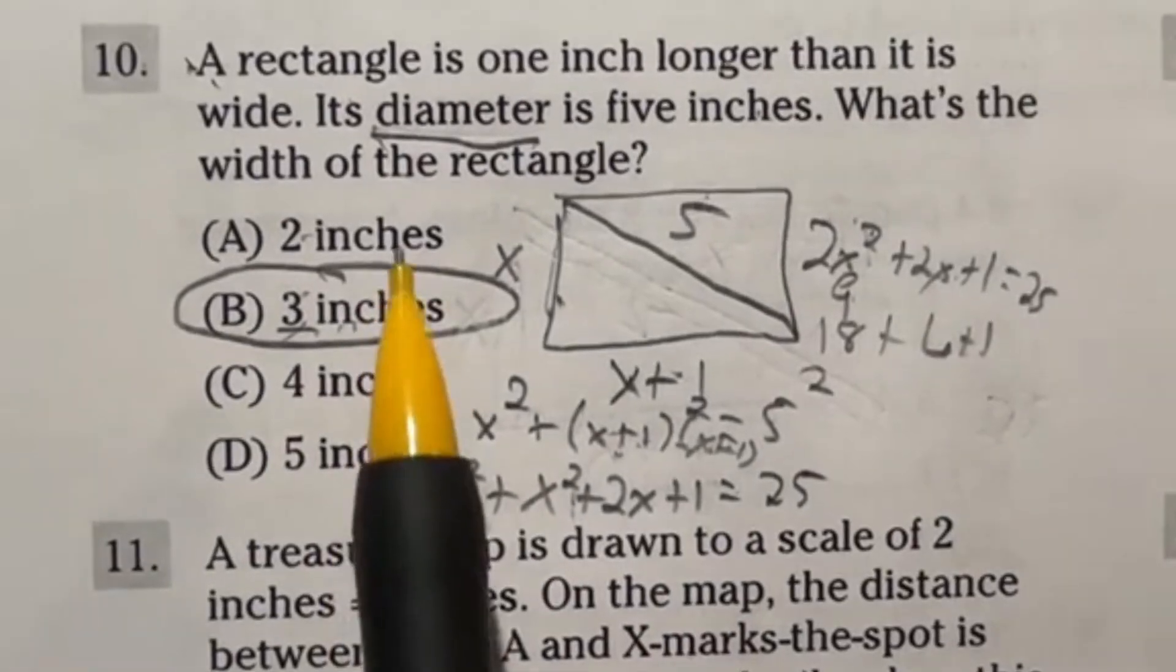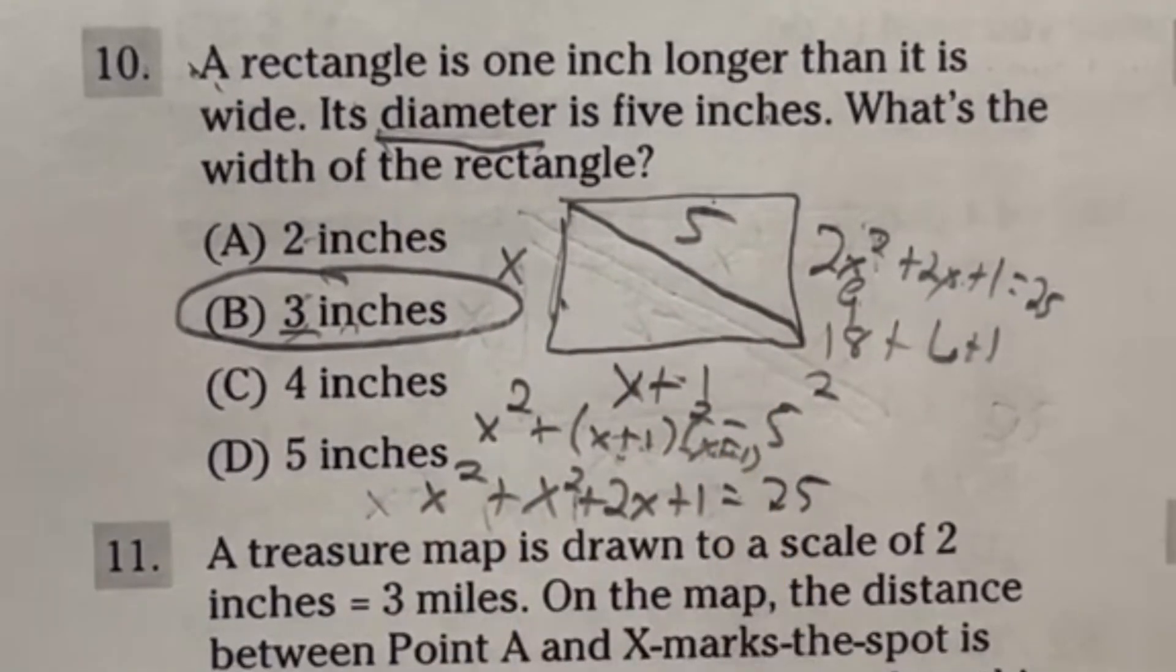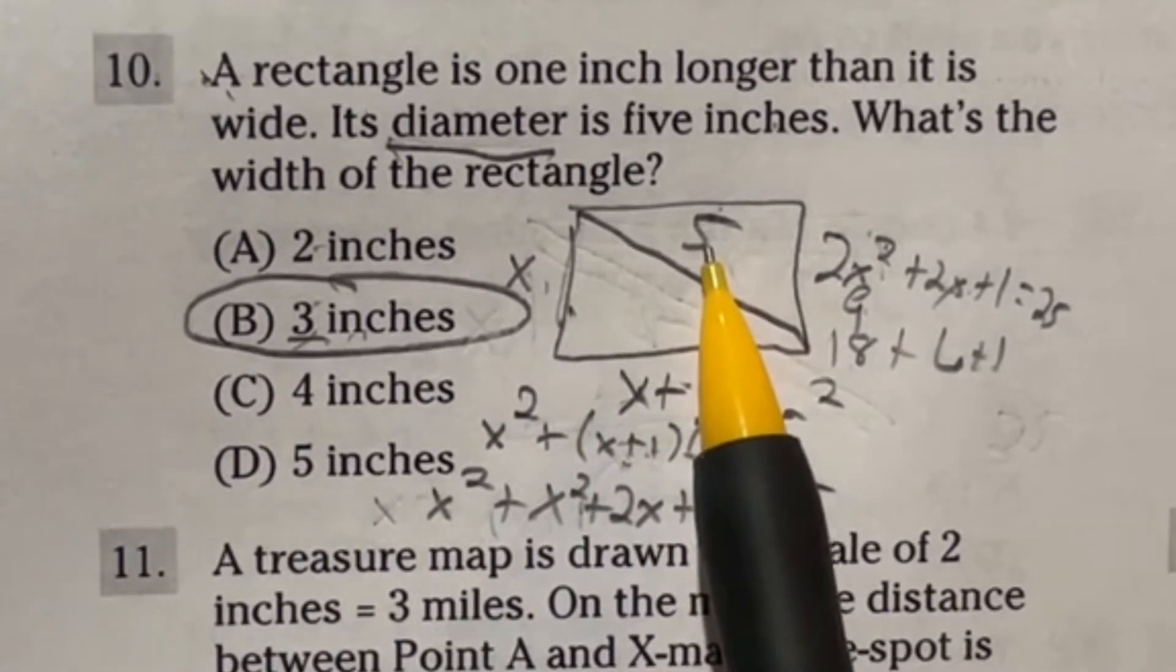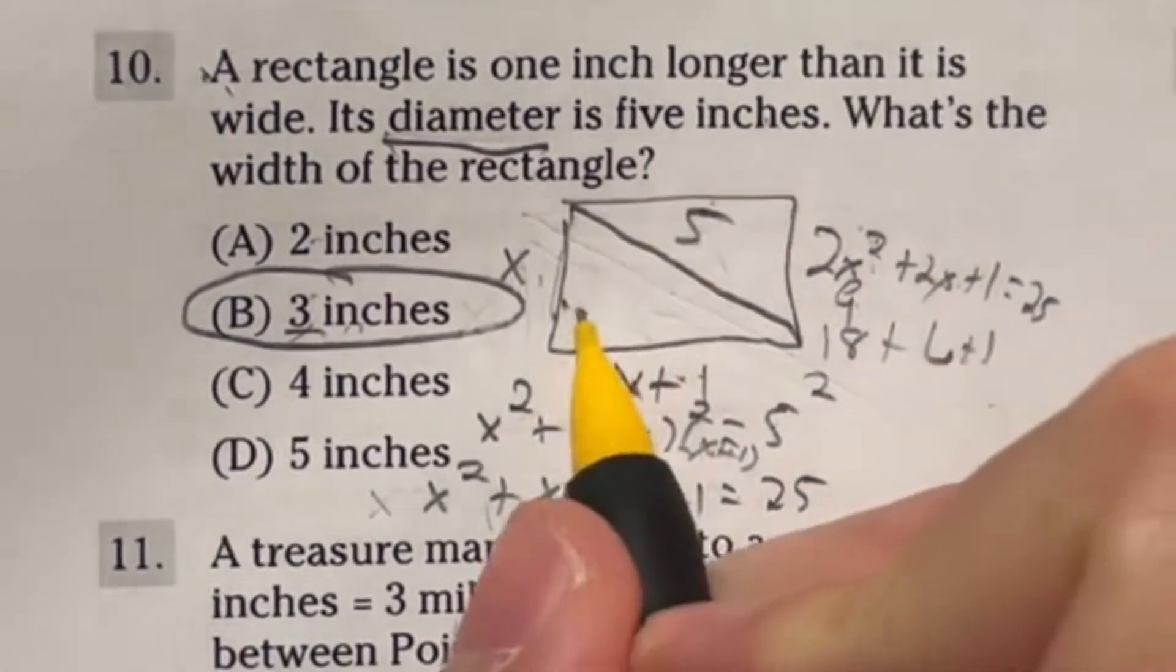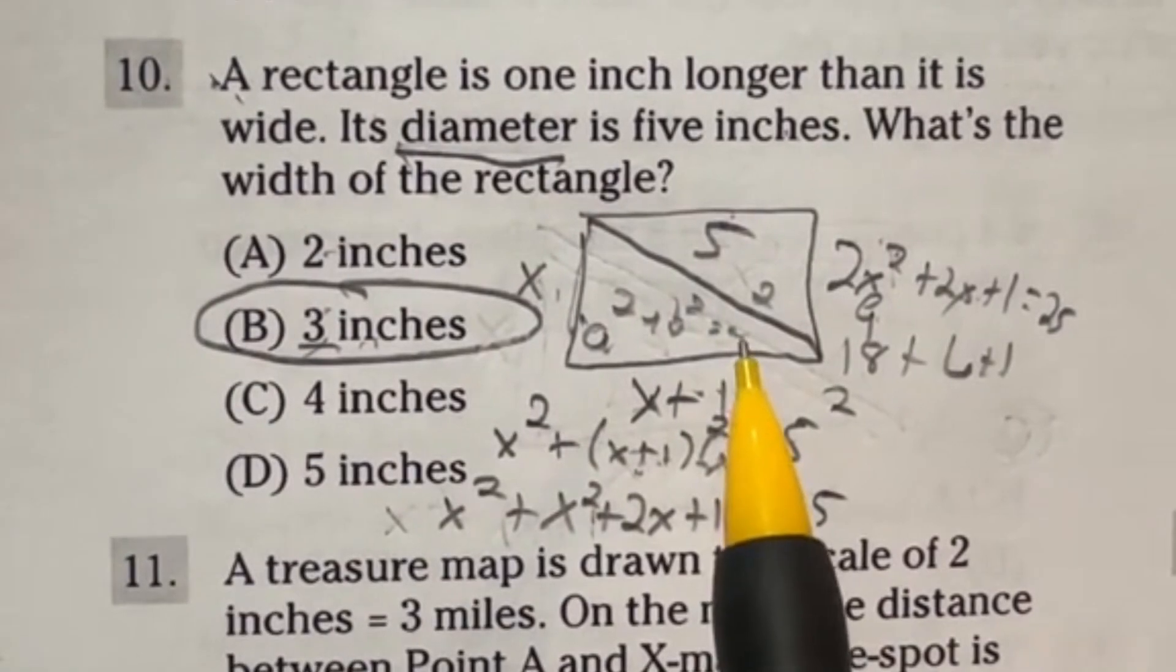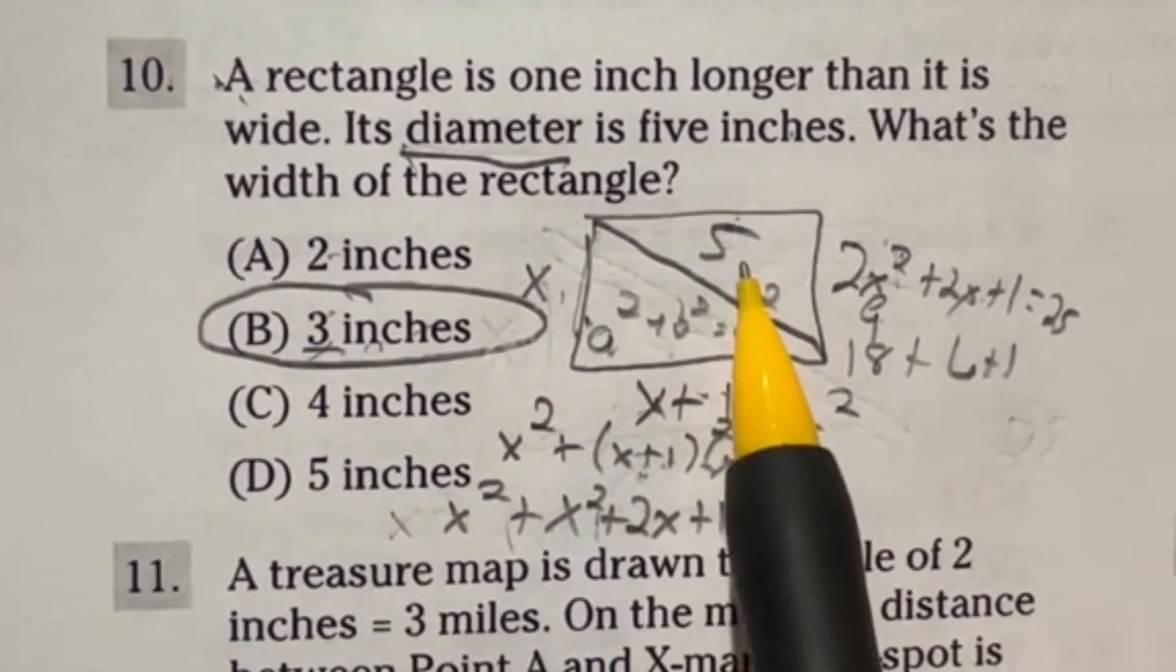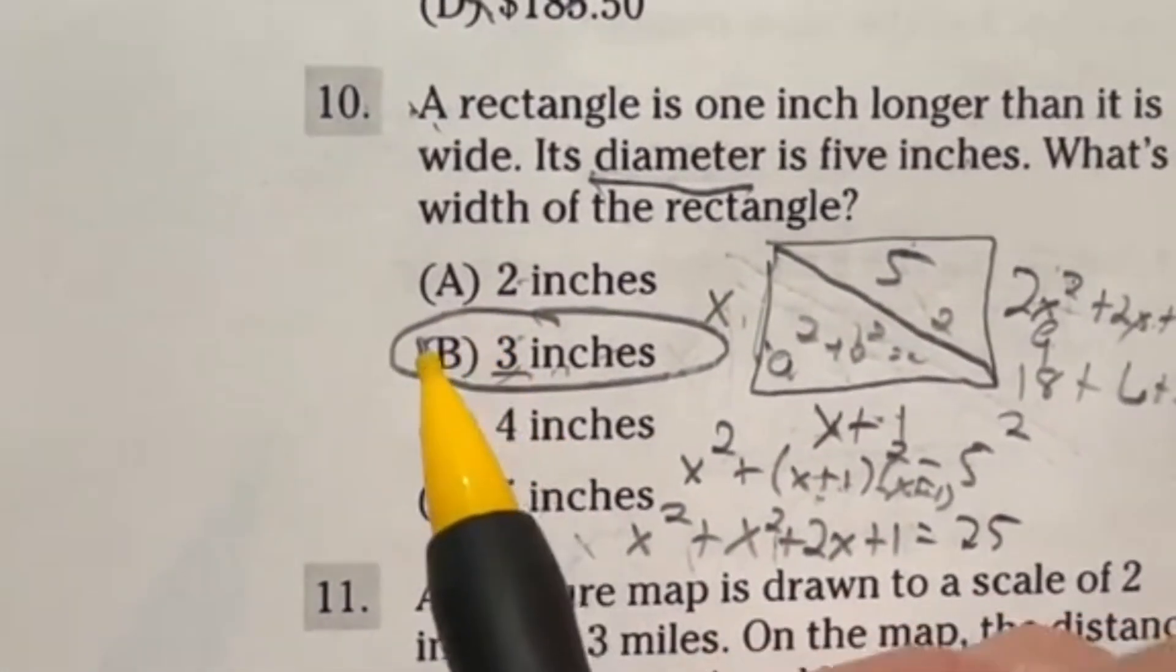So yesterday we solved this question after realizing they had a typo for diameter. It should really be diagonal. We wrote this picture out where we said we have one side that's X, we have an X plus one side, and then we have a five. Now I want to say there is another option still using A squared plus B squared equals C squared. Let's talk about what that second way would be. We plugged in our X's and solved using algebra and plugged in at the last minute to get three. But what if from the very start you tried plugging in to get your answer?